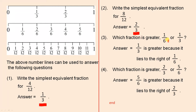Which fraction is greater: 1 over 6 or 1 over 3? Let's look at where these fractions sit. There is 1 over 6, and there is 1 over 3. The answer is that 1 over 3 is greater because it lies to the right of 1 over 6. You can see that 1 over 3 lies to the right of 1 over 6; hence it is bigger.